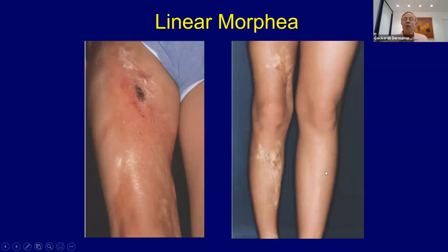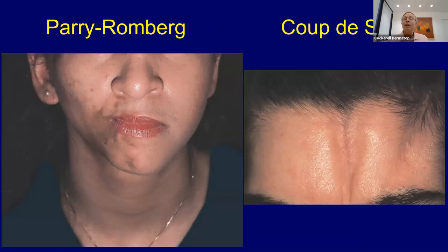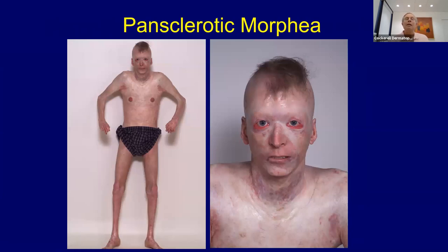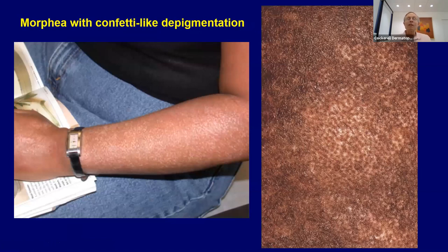Linear morphea — notice the difference in the size of the child's leg. It causes atrophy of the underlying bone and muscles. The Parry-Romberg sign, the coup de sabre manifestation. If you biopsy, these all look the same. Pan-sclerotic morphea — patients can actually get obstructive lung disease because their chest wall becomes so thickened and sclerotic that they can't move air. You can also get morphea with confetti-like pigmentation; those small areas look just like vitiligo on biopsy — they actually are depigmented in those lesions.